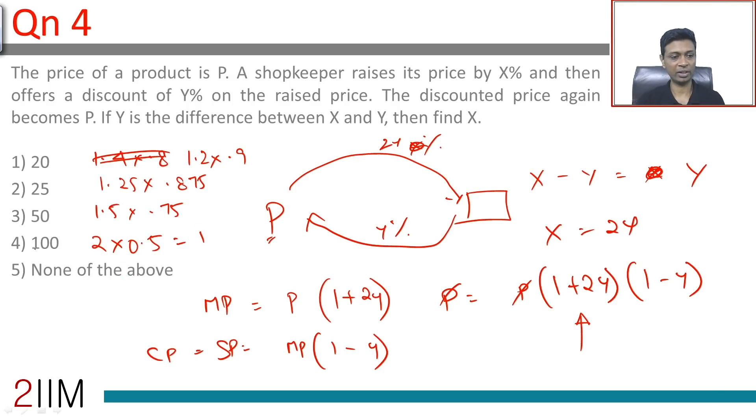I'm just substituting different values. 2 into 0.5 is 1, so X is 1 and Y is 0.5. So 1 plus 2 into 0.5 into 1 minus 0.5, that's 1 plus 1, 2 into 0.5, that is 1, that works.